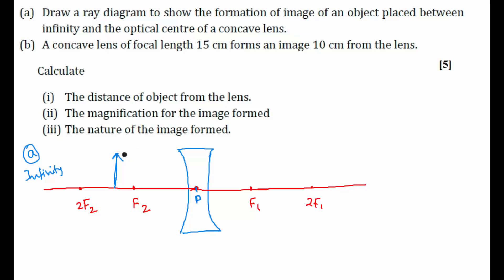The minimum number of rays we need to trace an image is two. The first ray I am taking is going parallel to the principal axis — a ray passing through the concave lens. How will the refracted ray go? It will go in such a way that when you retrace its path in the backward direction it will appear to come from the focus, meeting the principal axis at the focus.